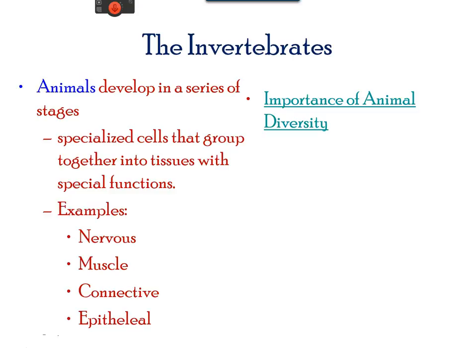Almost all animals have specialized tissue — those are similar cells, such as nervous tissue, muscle tissue, epithelial, and connective tissue. Various tissues form organs, and variant organs form an organ system. Animals have specialized connective tissue that provides many functions, including transport and structural support.